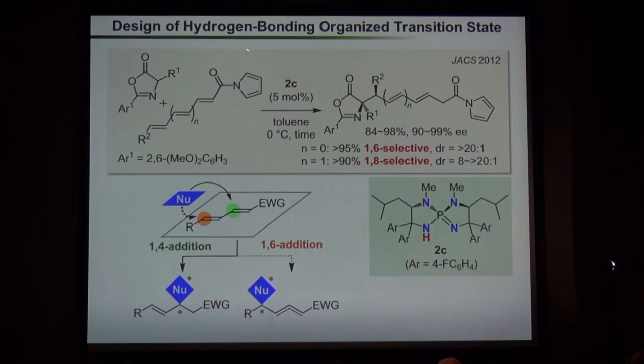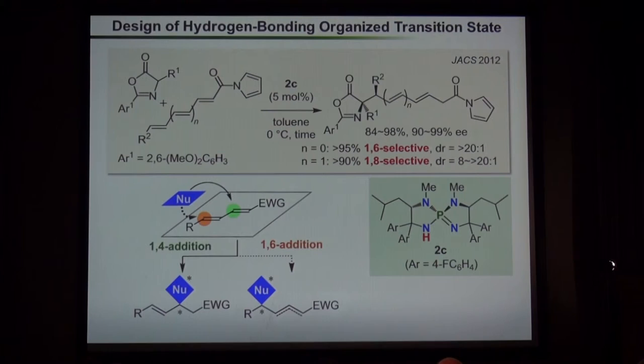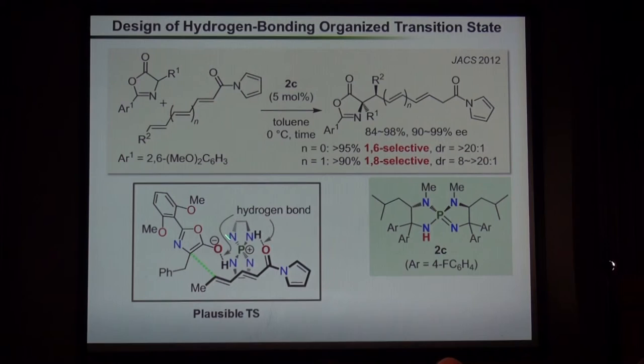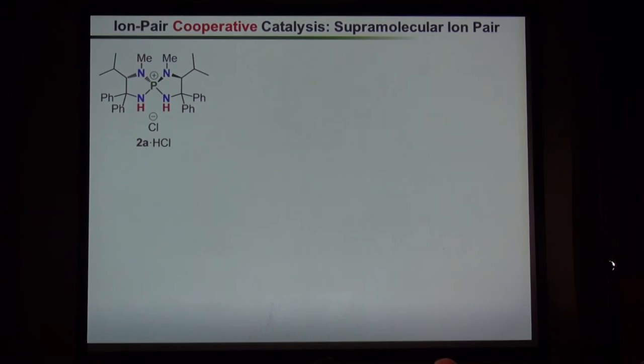Recently, we further turned our attention to the design of hydrogen-bonding-organized transition states. For example, regioselectivity in conjugate addition to electron-deficient dienes is usually problematic because the electron-deficient diene has two similarly reactive sites, and the nucleophile must discriminate between them. By using our aminophosphoramide salt, we can assemble the anionic nucleophile and electrophile at the appropriate positions to form a cyclic transition state, enabling highly regio- and diastereoselective conjugate addition to electron-deficient trienes or dienes.